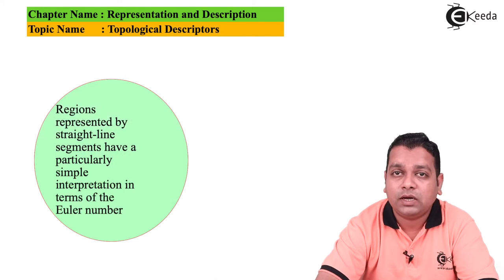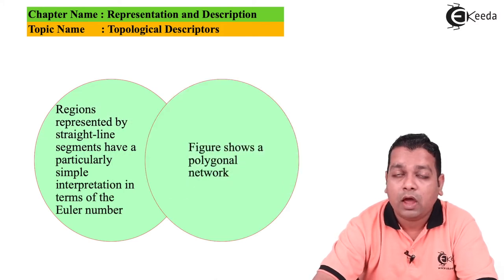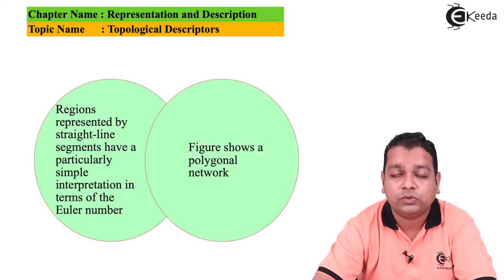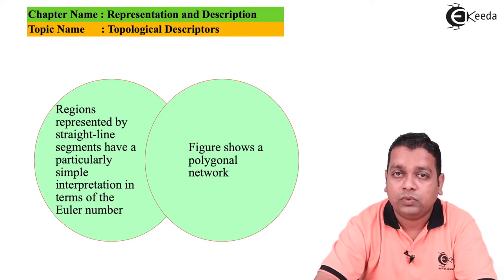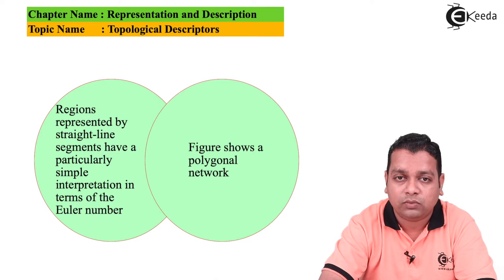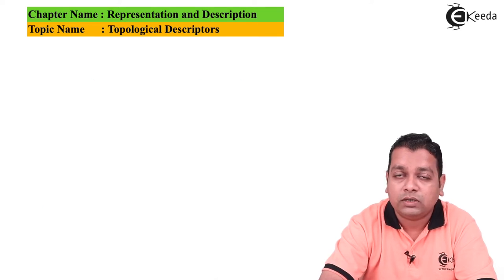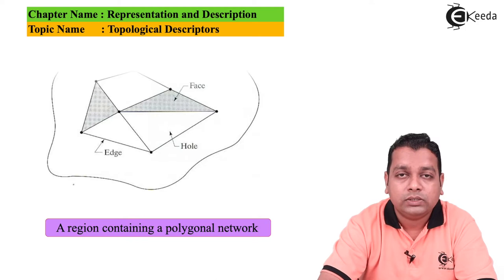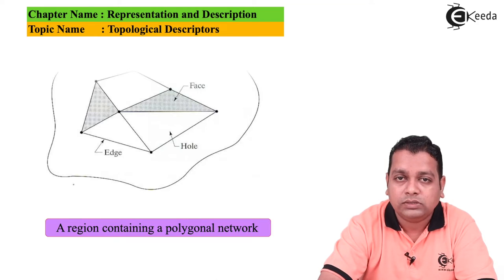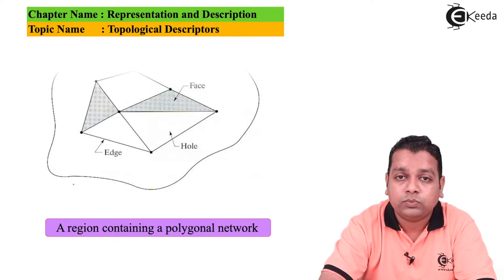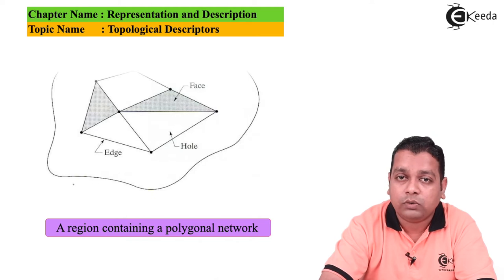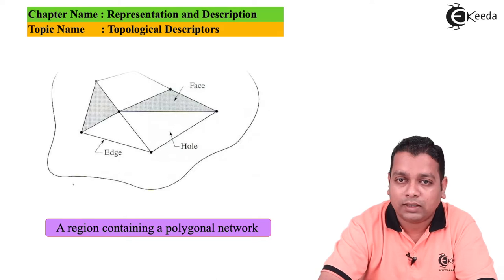Regions represented by straight line segments have a particularly simple interpretation in terms of the Euler number. Consider a figure showing a polygonal network: edges are straight lines, holes are white areas, the shaded face portions are the faces of the polygonal components, and the corners are the vertices.